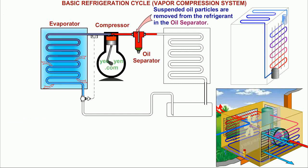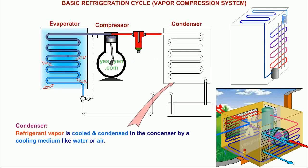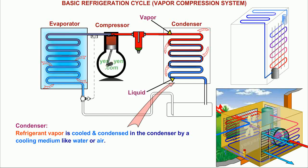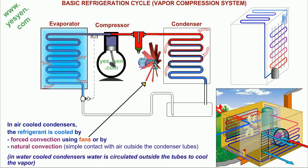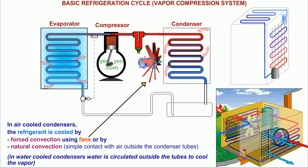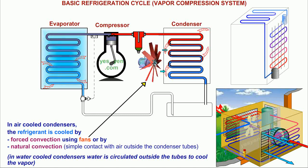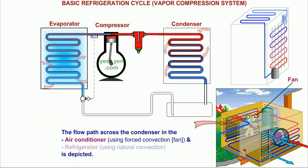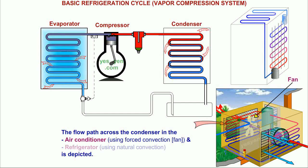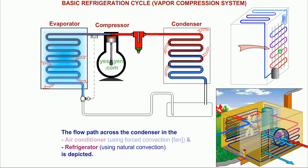Suspended oil particles are removed from the refrigerant in the oil separator. Condenser: Refrigerant vapor is cooled and condensed in the condenser by a cooling medium like water or air. In air-cooled condensers, the refrigerant is cooled by forced convection using fans, or by natural convection. In water-cooled condensers, water is circulated outside the tubes to cool the vapor. The flow path across the condenser in the air conditioner using forced convection and refrigerator using natural convection is depicted.